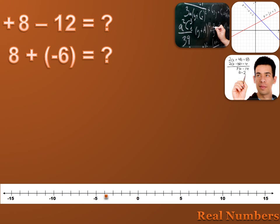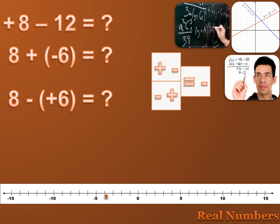Here's something else that can be confusing: if I'm adding a negative number or subtracting a positive number, what do I end up doing? It's easy. If I've got a plus symbol and a negative symbol, or if I'm subtracting a positive number, both of those mean subtract. So 8 plus minus 6 or 8 minus plus 6 both mean 8 minus 6, which equals 2.